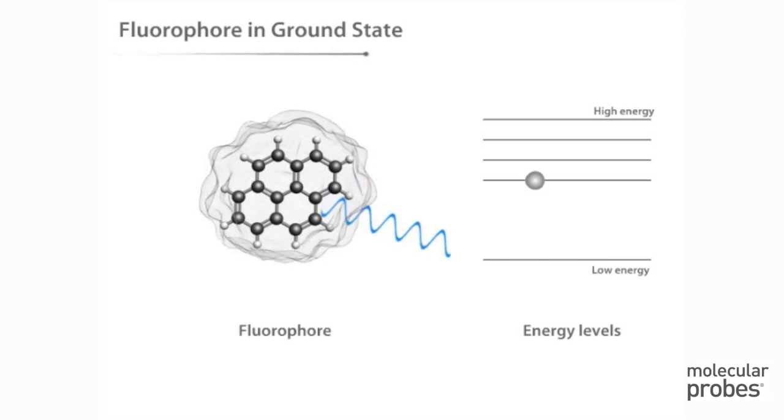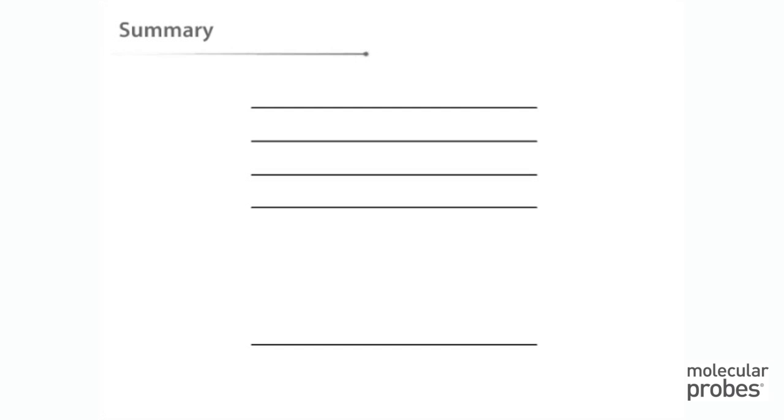Emission of light returns the fluorophore to its ground state. The fluorophore can absorb light energy again and go through the entire process repeatedly. The cyclical fluorescence process can be summarized as: